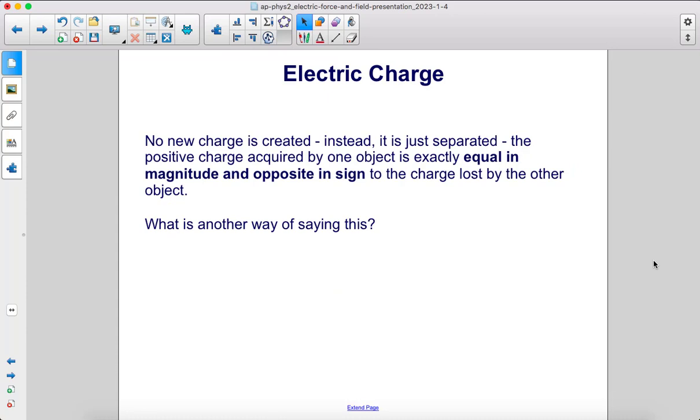No new charge is created. Instead, it's just separated. The positive charge acquired by one object is exactly equal in magnitude and opposite in sign to the charge lost by the other object.